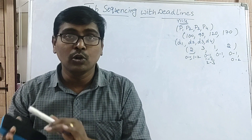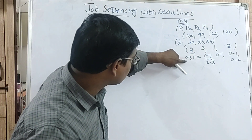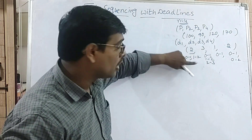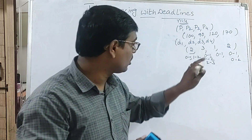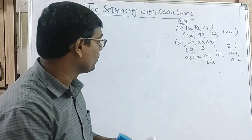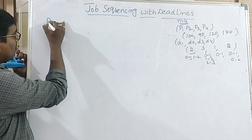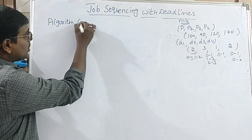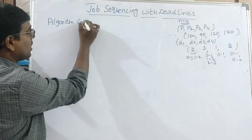No job is allowed to execute on the same slot. For example, under slot 1, if job 1 is executed, slot 1 is completed — no other job can run on the same slot. Job sequencing with deadline is a greedy approach.